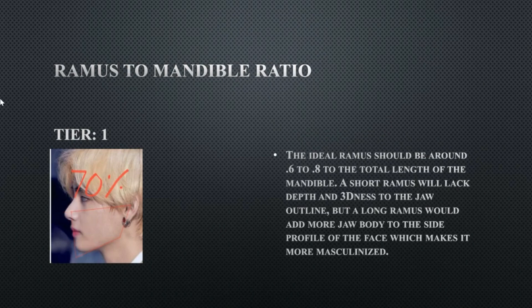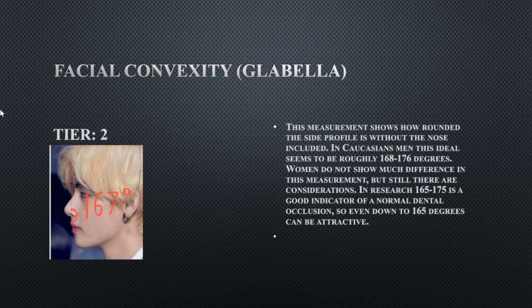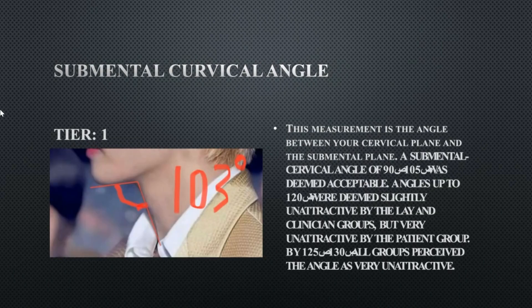His ramus-to-mandible ratio is 70 percent, which is perfect — he does have a lot of jaw body as you can see. His facial convexity from the glabella is tier 2 at 167 degrees, very slightly outside the ideal range. It's more on the rounded side, but this is essentially no flaw — it's only one degree away from ideal; 168 degrees would have been ideal.